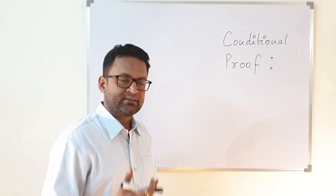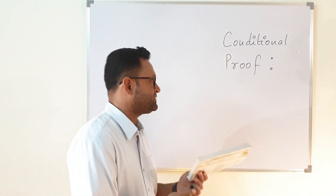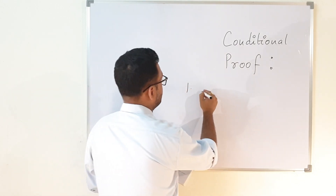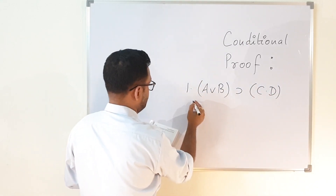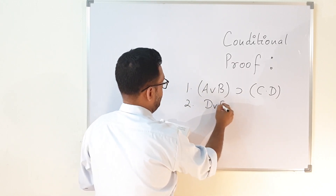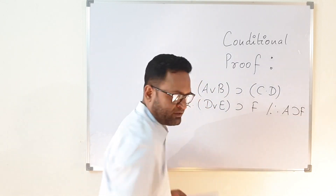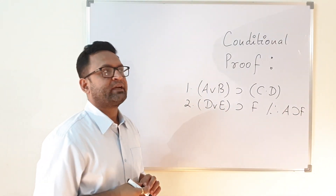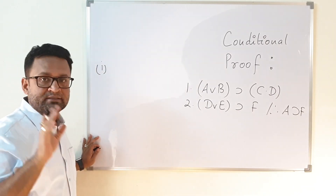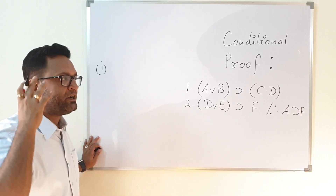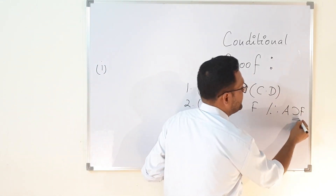Before discussing how conditional proof is applied, let us understand the theory. Suppose a question is given like this: on line number one you are given A wedge B implies C dot B, and then another premise B implies F, and the conclusion is A implies F. Now, conditional proof is applied only when certain conditions are fulfilled. Conditional proof will be applied only when the conclusion has a material implication as the main connective.